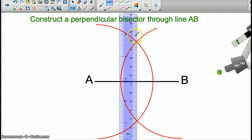And drawing a line from the top of that point to the bottom of that point will give me a perpendicular bisector to AB.